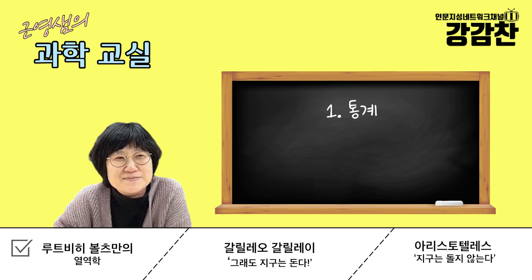통계라는 게 출연하는 건 굉장히 중요한 거고, 저도 아직 이 부분이 완전히 풀리지 않아서 같이 고민해 보려 합니다. 지금은 여론 통계 등 통계가 너무 많아서 당연하게 느껴지지만, 이게 당연하지 않던 시대가 있었다는 거예요. 통계, 열, 역학 세 가지로 나눠지는데, 일단 열이라고 하는 것부터 볼게요.